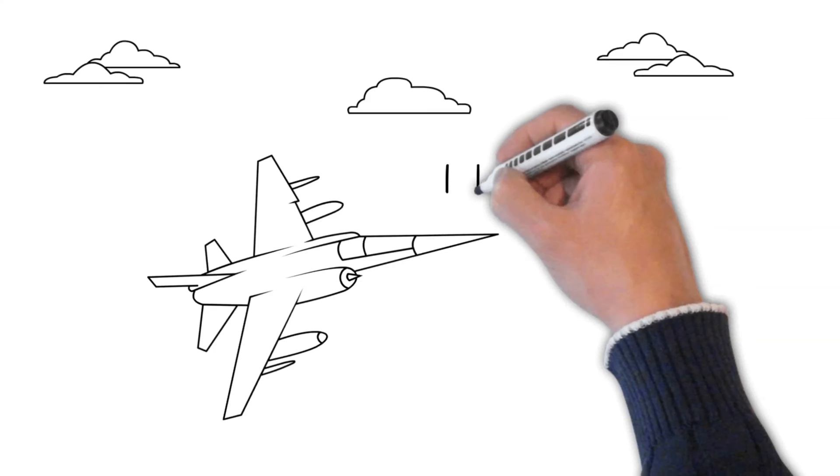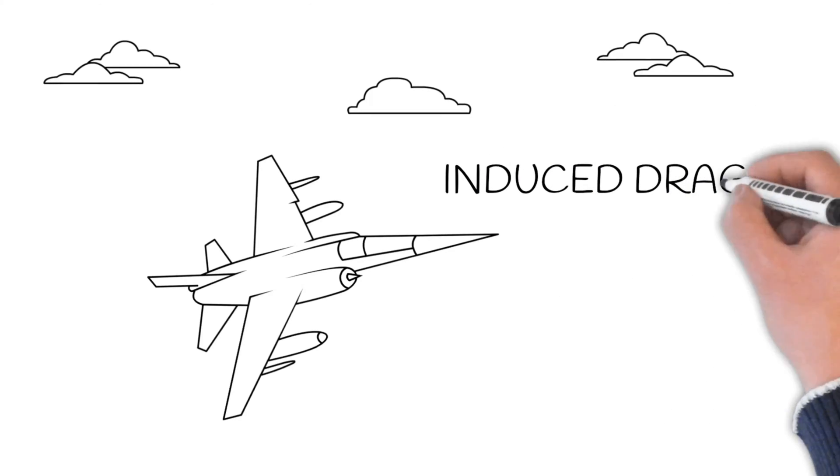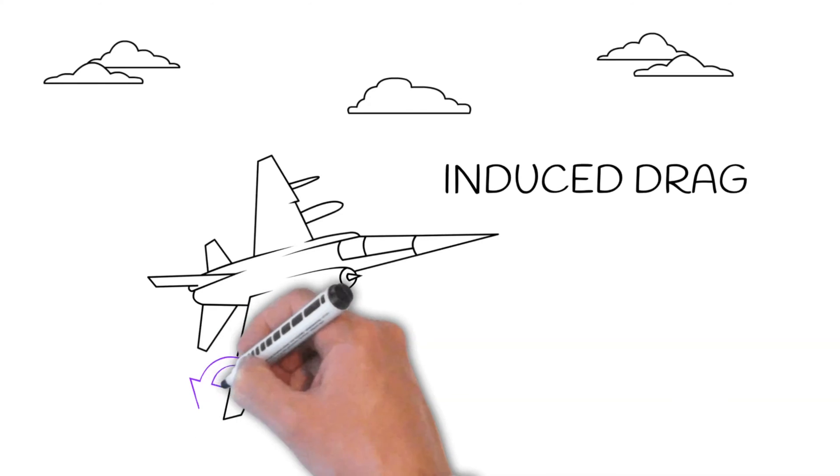Induced drag is drag that's created as a direct result of lift. Because of the nature of how a wing creates lift, it will also create drag.